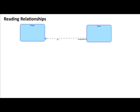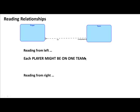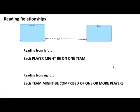Let's look at another example. Reading from the left: 'each player might be' — dashed line — 'on one team', no crowfoot. Reading from the right: 'each team might be' — dashed line — 'composed of' — relationship name — and when you see a crowfoot, you say 'one or more', so 'one or more players.' Because it is 'more', we use the plural of the entity type: 'players.'